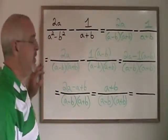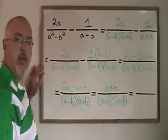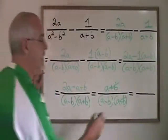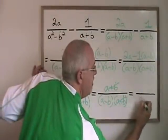And we have a cancelling opportunity. Since both top and bottom have a plus b in them, we can cancel the a plus b's. Our final answer will be over a minus b.